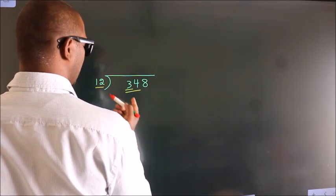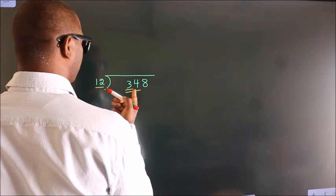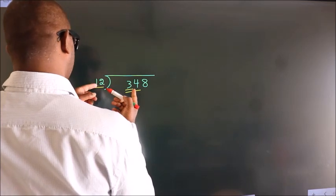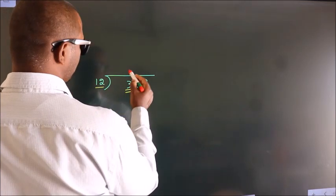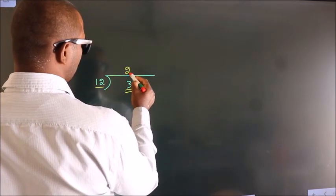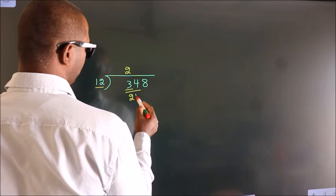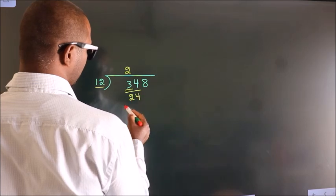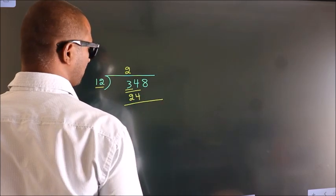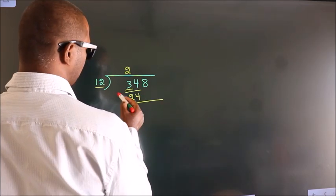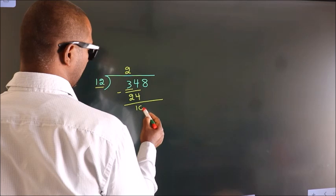34. A number close to 34 in the 12 times table is 12 twos, which is 24. Now we should subtract. We get 10.